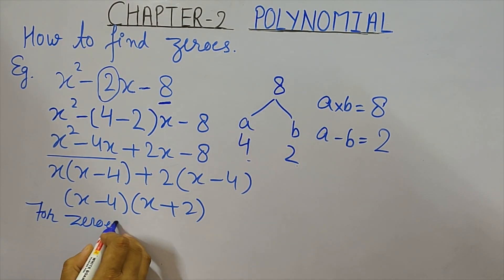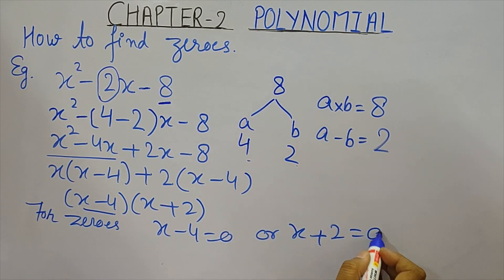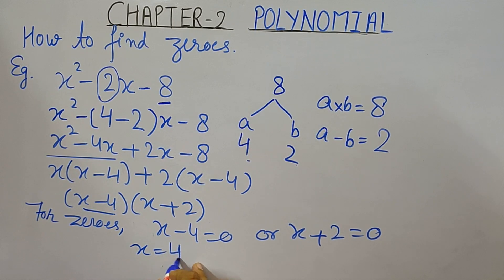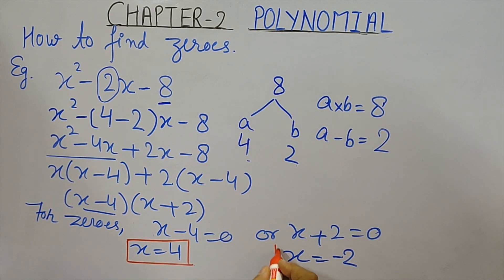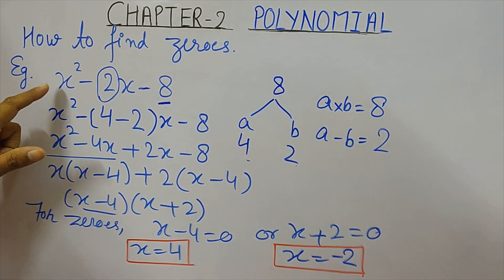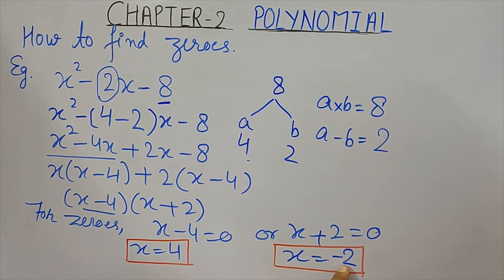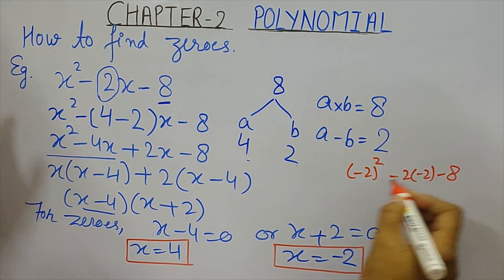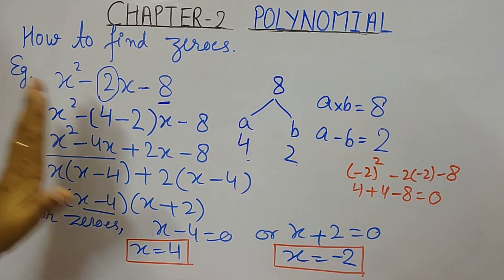To find zeros, either bracket should be 0. If x - 4 = 0, we get x = 4. If x + 2 = 0, we get x = -2. We can verify: at x = 4, 16 - 24 + 8 = 0, and at x = -2, (-2)² - 6×(-2) + 8 = 4 + 12 - 8... wait — 4 + 12 + 8, giving 0. So these are the zeros.